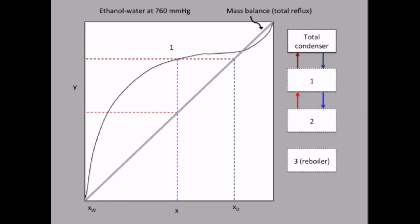And then we just repeat. The liquid falling down from equilibrium stage 2 must be given by the system curve, so that's this point here. And now we have drawn our second equilibrium stage.